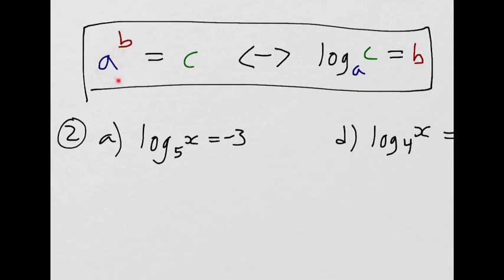So the base of the exponent becomes the base of the logarithm. The exponent of this power becomes what the logarithm is equal to. And what the power was originally equal to becomes the argument inside the logarithm. This part here is called the argument. So that's going to be useful especially for the next few examples that we're going to look at, being able to convert between those two forms.